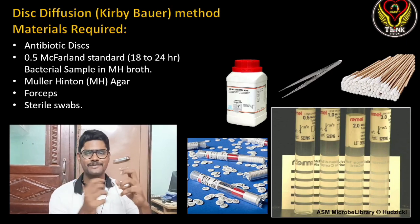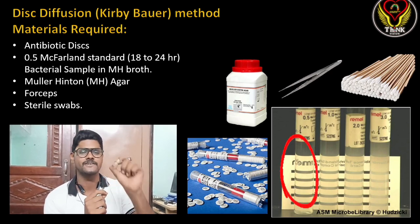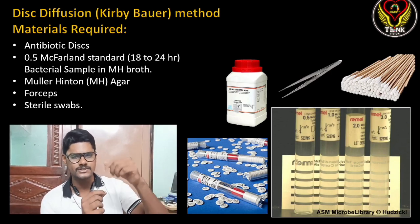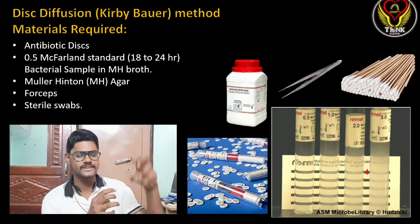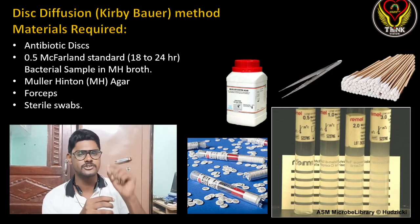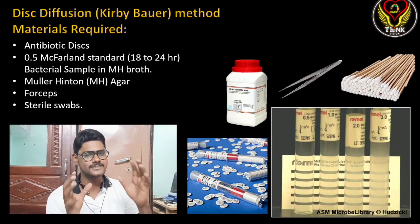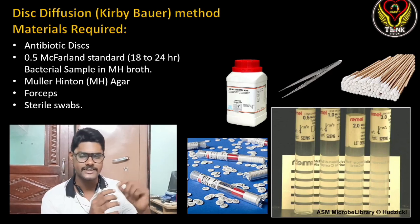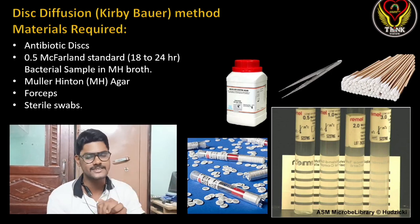The second material is the 0.5 McFarland standard. In the picture you can see four test tubes placed together where the turbidity is increasing. The first tube is somewhat turbid but mostly clear — you can see the lines behind it clearly. The fourth tube is very turbid. You have to choose the 0.5 McFarland standard culture, which is achieved by incubating the bacterial culture for 18 to 24 hours.